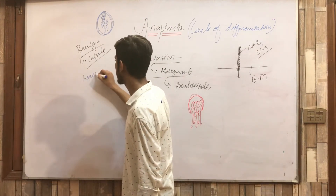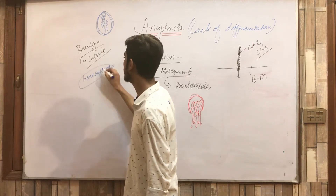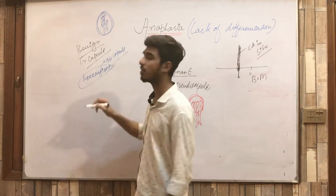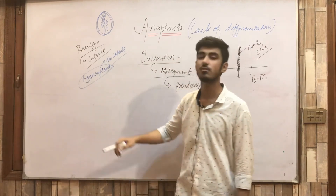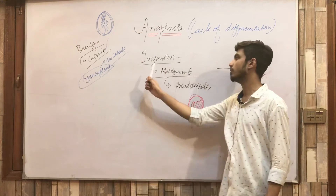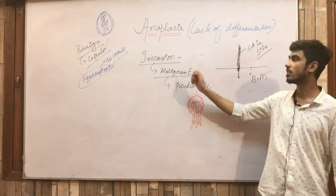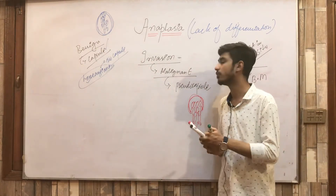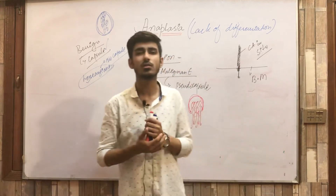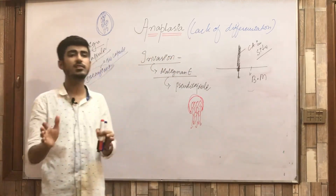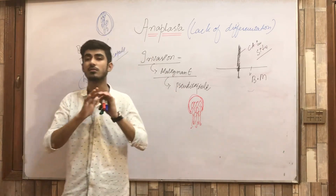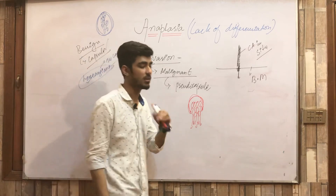One exception in benign tumors: hemangiomas do not form a capsule, while other benign tumors do form a capsule and do not invade. Malignant tumors have the capacity to invade and form only a pseudo-capsule. Further on, we will study more terminologies and then compare benign and malignant tumors, after which all concepts about both will be clear.